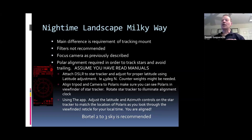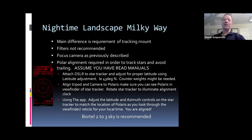The mount I use is an iOptron Sky-Guider Pro, but there are many mounts out there — Skywatcher has a whole family. There are even some battery-operated lightweight mounts meant for wide field astrophotography that are quite inexpensive. Once you start using tracking mounts, you also need polar alignment, which is why I brought up Polar Scope Align Pro. Most tracking mounts have a polar scope with a reticle for polar alignment.